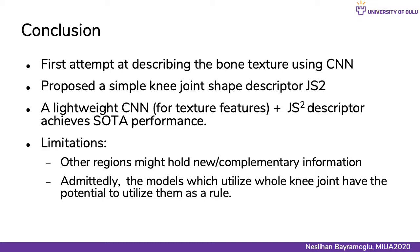To conclude: this was the first attempt at describing bone texture using CNN, and compared to heavy deep CNN models that use whole joint images, our tiny model still has the ability to recognize OA with high accuracy. Second, we propose a simple but efficient joint shape descriptor to detect OA from plain radiographs, and our combined model achieves state-of-the-art performance. There are also limitations: although medial OA is more common, other bone compartments such as lateral and femur margins — which might hold complementary information — were not evaluated. Their inclusion could further improve performance. Admittedly, models which utilize whole joint radiographs have the potential to utilize those features and are potentially better suited for fine-grade KL classification.